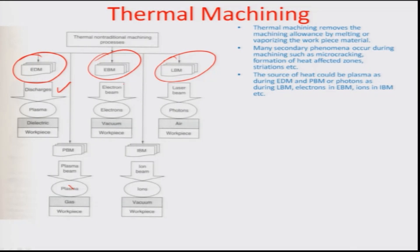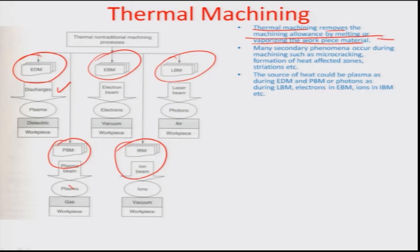There can be many other means of creating high-temperature zones on the workpiece — plasma beams and ion beams are also ways thermal machining can be achieved. The basic principle behind thermal machining is removal of the machining allowance by melting or vaporizing the workpiece: you must increase the surface kinetic energy to an extent that the material starts melting. Many secondary phenomena occur during the machining process such as micro cracking, formation of heat-affected zones, striations due to reflow and recrystallization, and process parameters must be optimized to minimize these.